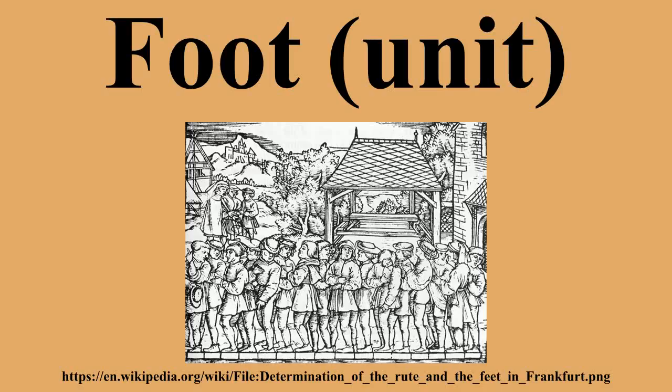The international yard and pound agreement of July 1959 defined the length of the international yard in the United States and countries of the Commonwealth of Nations as exactly 0.9144 meters. Consequently, the international foot is defined to be equal to exactly 0.3048 meters. This was 2 ppm shorter than the previous US definition and 1.7 ppm longer than the previous British definition.